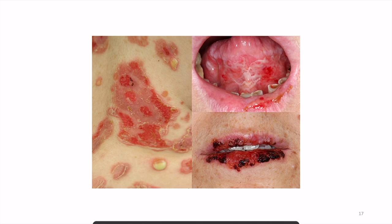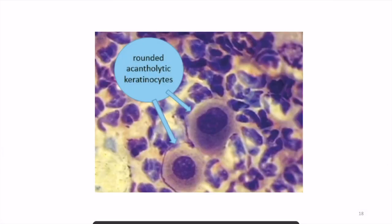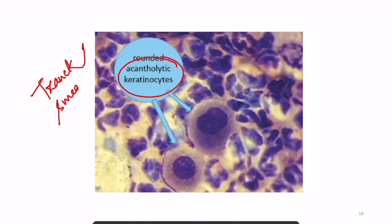Here you can see the lesions of pemphigus closely — very flaccid blisters are seen. One very important sign which you can elicit in this patient is Nikolsky sign. On histology or on Tzanck smear, acantholytic keratinocytes are seen. If you find acantholytes or acantholytic keratinocytes on Tzanck smear, it is suggestive of pemphigus.